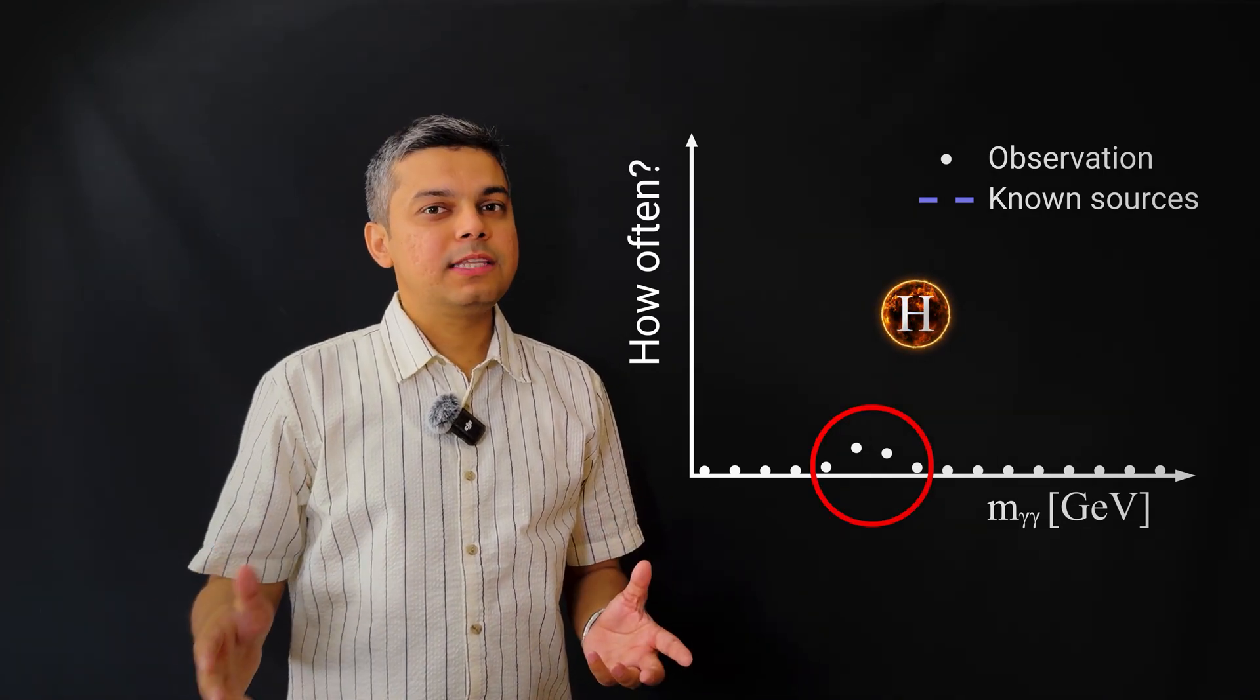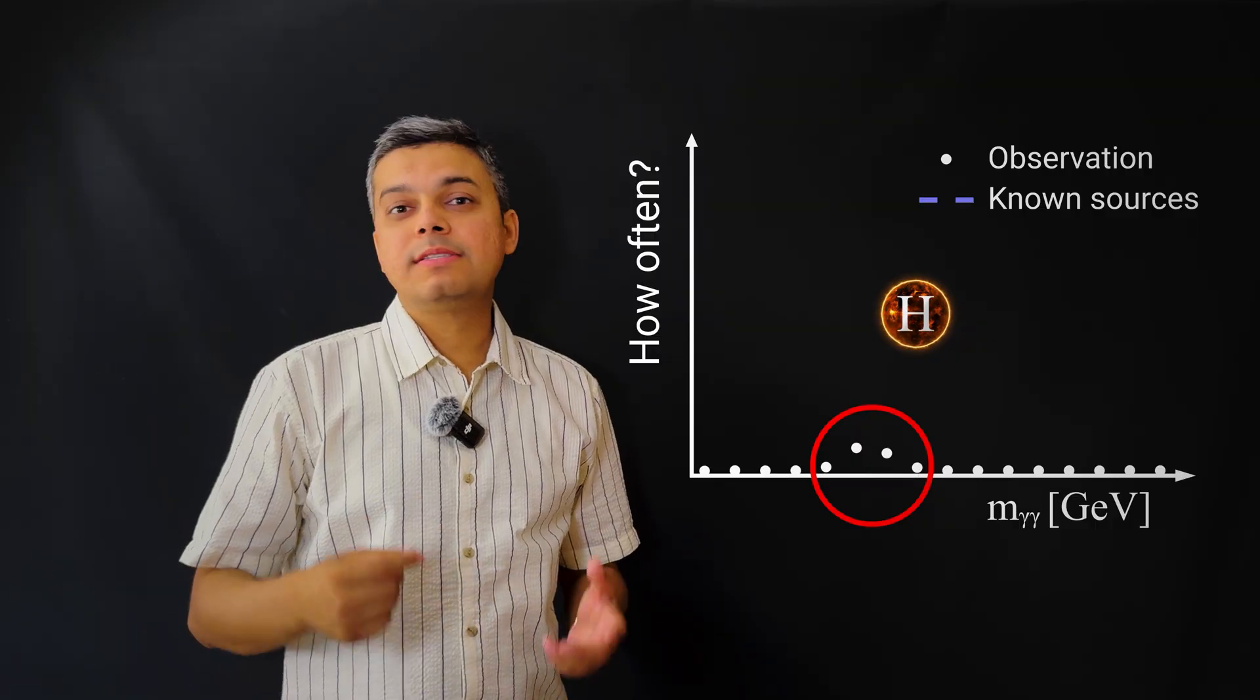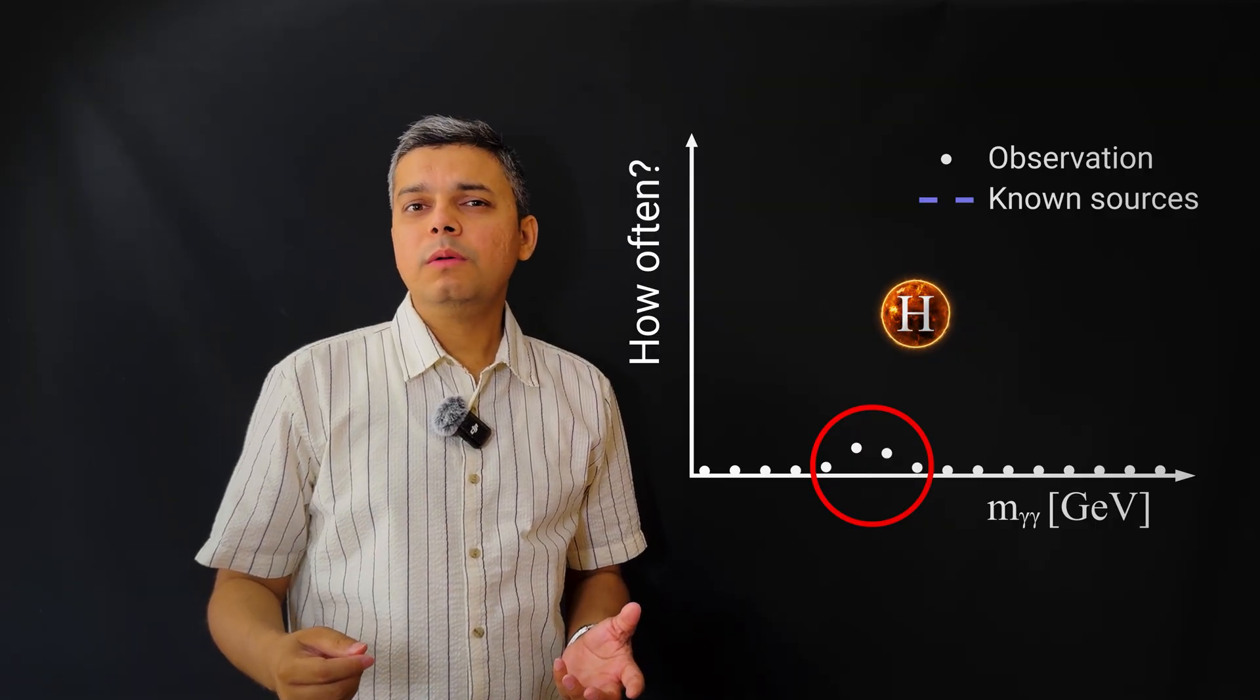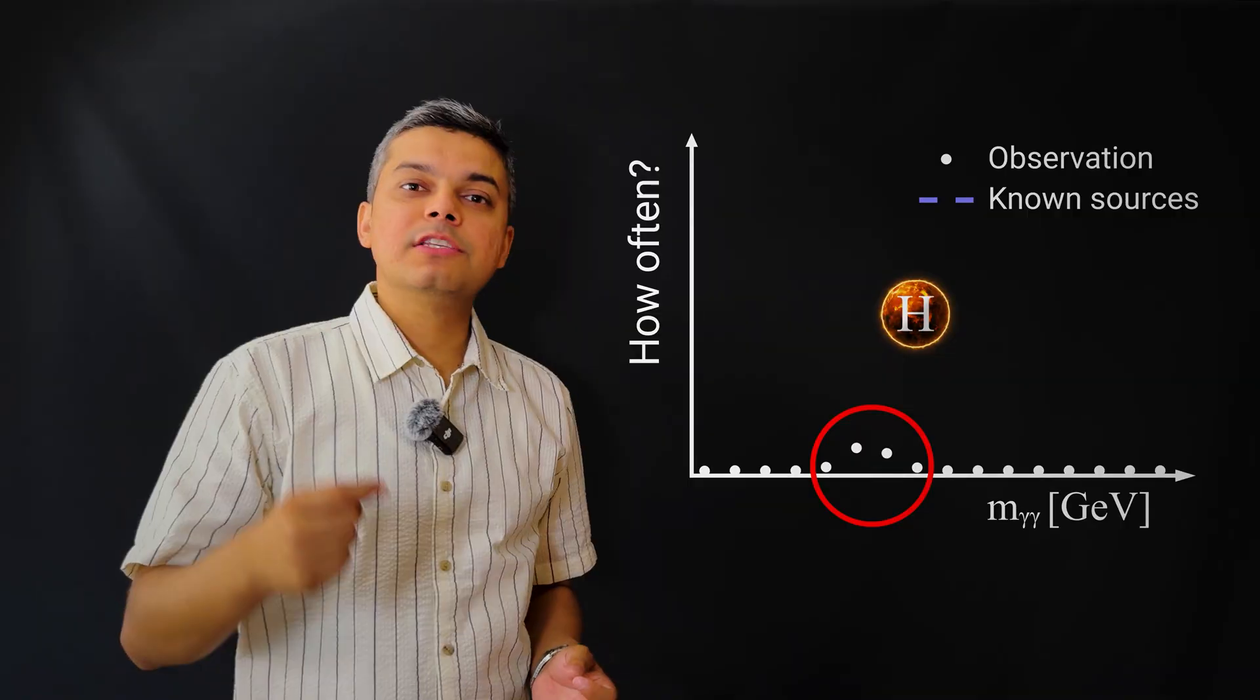But how do we know that the particle we saw was the Higgs boson? Well, we don't. At least not until we measure its properties.